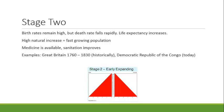In stage two, we start to see a population boom. Birth rates remain high, but death rates fall rapidly because life expectancy is starting to increase. People are still having lots of kids, but now most of them are surviving into adulthood. If they continue to have lots of kids when they grow up, the population can start to grow very, very rapidly — one generation is larger than the last, and then even larger again. This is like exponential growth.